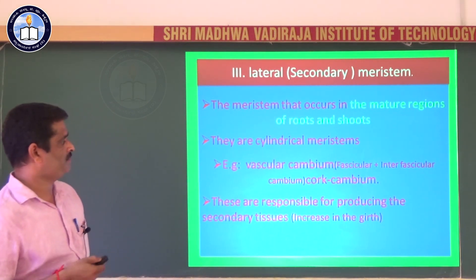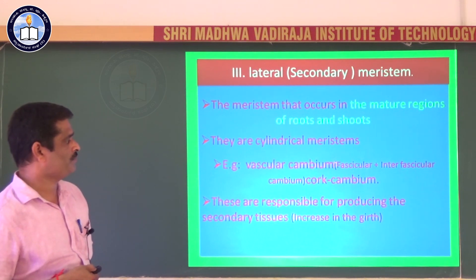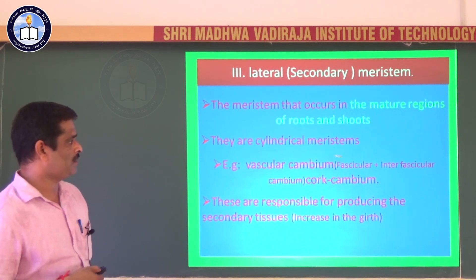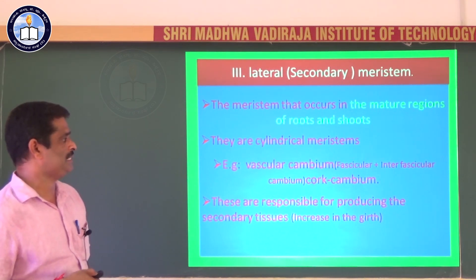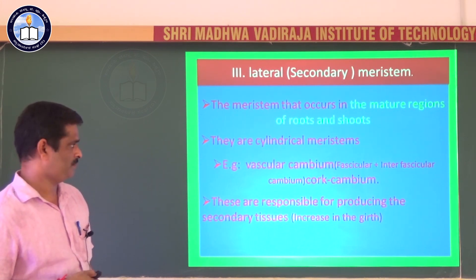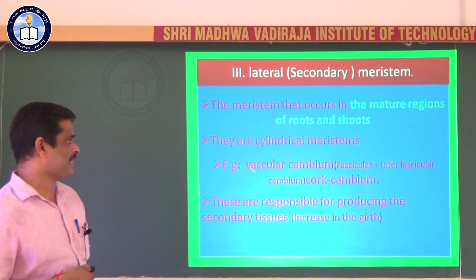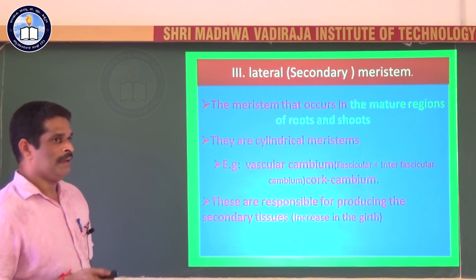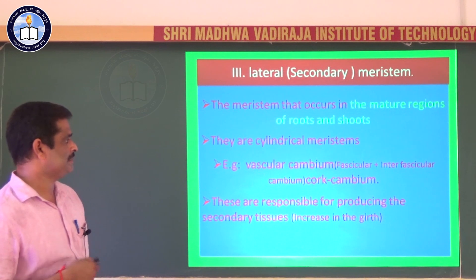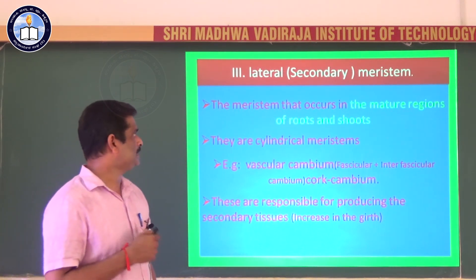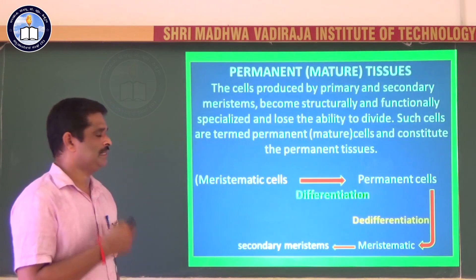Vascular cambium is formed of fascicular and interfascicular cambium. Fascicular cambium is of primary origin; interfascicular cambium is of secondary origin. If you consider vascular cambium as a whole, it is partly primary and partly secondary in origin. But by function and structure, it is a secondary meristem. That is about meristematic tissues.